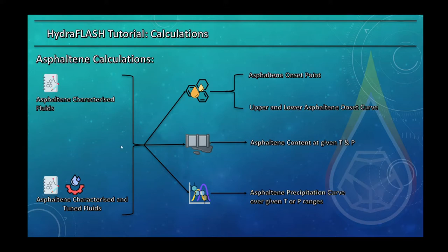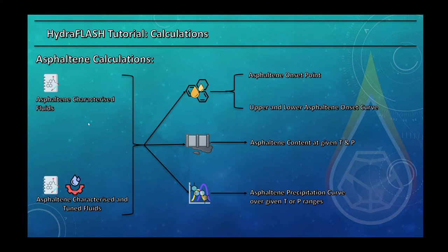For asphaltene calculations, a fluid must be characterized and tuned. We have shown how to characterize a fluid using SARA analysis data and how to tune the PC-SAFT parameters using AOP, titration, or saturation data. Once characterized and tuned, you can use those fluids for different calculation modules. Remember, you can use an only-characterized fluid, but the results won't be reliable without tuning.